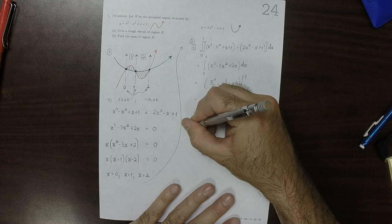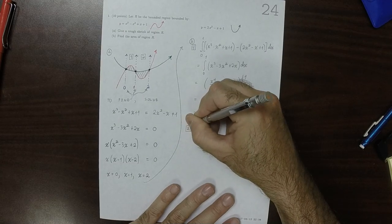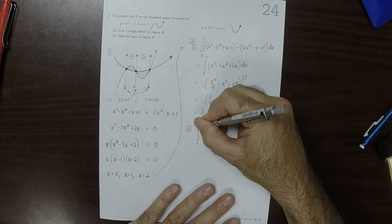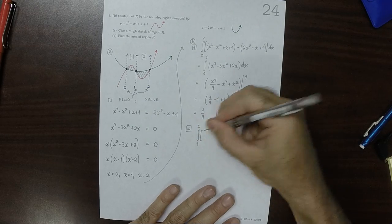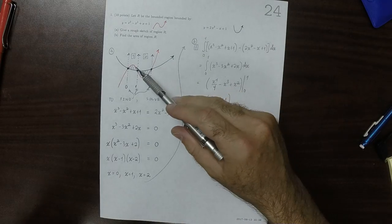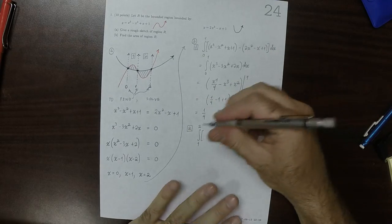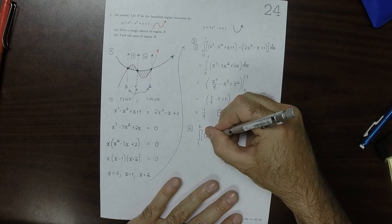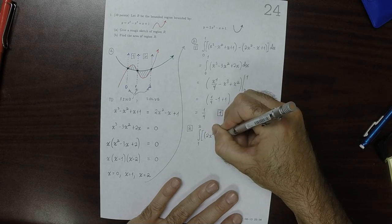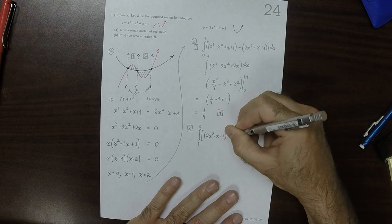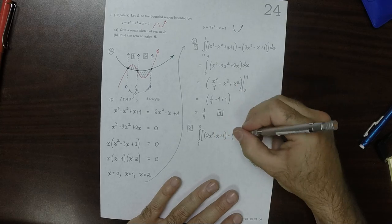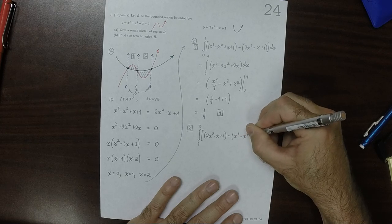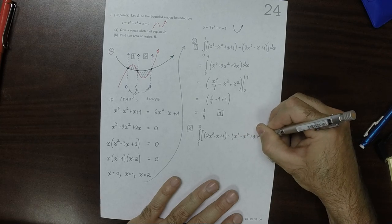And region 2 will be the integral from 1 to 2. And now, instead of being red minus green, it'll be green minus red, which is to say it'll be 2x squared minus x plus 1 minus x cubed minus x squared plus x plus 1.